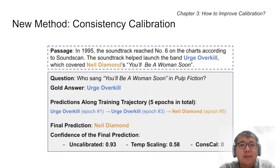We thus propose a more effective calibration method, consistency calibration, or ConsCal for short. The idea is simple. Throughout training, if the model predictions stay the same, we assign a high confidence. If the model predictions change, we assign a low confidence.